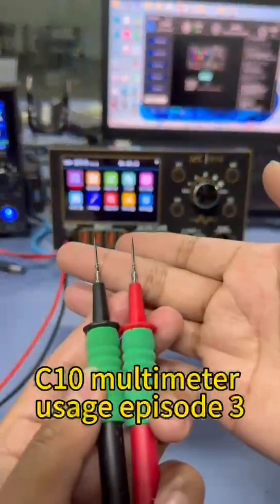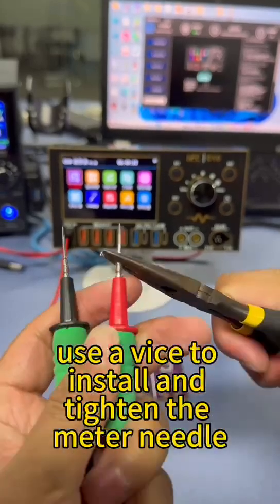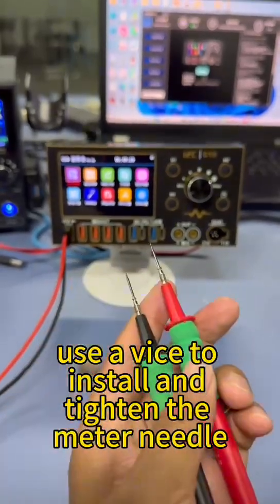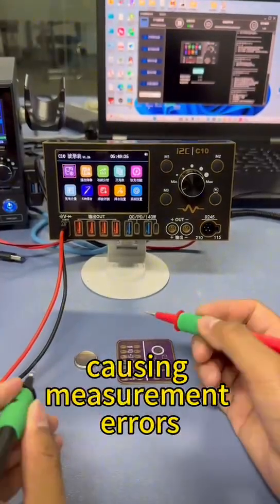C10 multimeter usage episode 3. After receiving the product, use a vise to install and tighten the meter needle. Otherwise resistance may be generated, causing measurement errors.